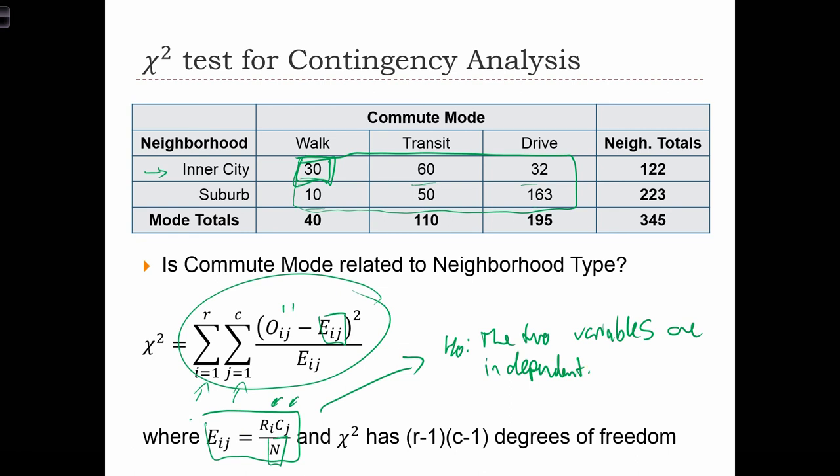So what this is saying is if neighborhood type is unrelated at all to commute mode, then we would expect to see ri times cj over n in each of these internal cells. What that means is the amount of people we expect to see in this cell is just a function of this, which is r1, the total number of inner city people,